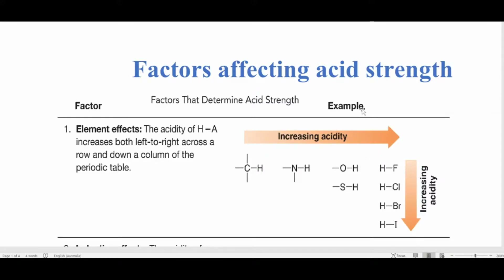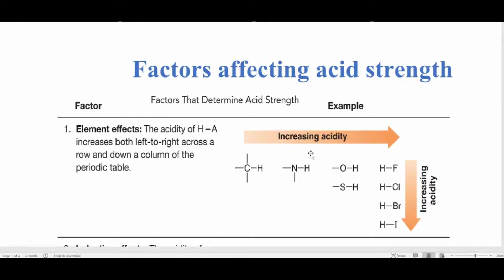Let's discuss the number one effect: the element effect. You can easily predict from periodic table trends — as you go from left to right, acidity increases, and as you go from top to bottom, acidity also increases. For example, if asked which is more acidic, methane or HF, carbon is in group four and fluorine is in group seven, so HF is more acidic. Similarly, HI is more acidic than HF due to the downward trend.